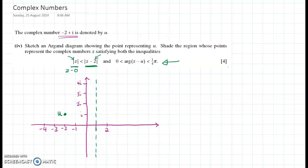OK, so if we look at the other side, we have that the argument of z minus u has to be between zero and a quarter pi. Now, a quarter pi is 45 degrees.